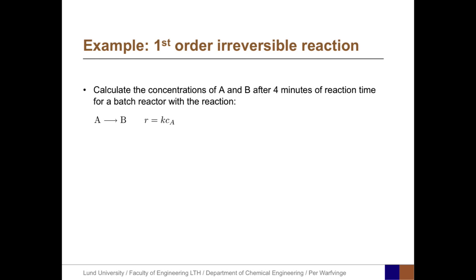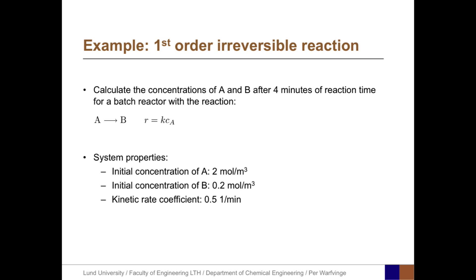Let's turn to an example. Calculate the concentrations of A and B after 4 minutes of reaction time for a batch reactor with the reaction A yields B, and the rate equation is K times C_A. The system properties are: the initial concentration of A equals 2 moles per cubic meter, the initial concentration of B equals 0.2 moles per cubic meter, and the kinetic rate constant for this first-order reaction is 0.5 per minute.